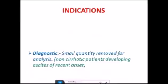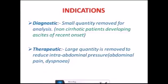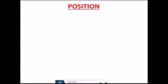Indications for ascitic tap: Diagnostic tap, where a small quantity is removed for analysis — indications include a non-cirrhotic patient developing ascites of recent onset to determine the cause. Therapeutic tap, where a large quantity such as 1 to 1.5 litres is removed to reduce intra-abdominal pressure, for example in patients with abdominal pain or dyspnea due to ascites.